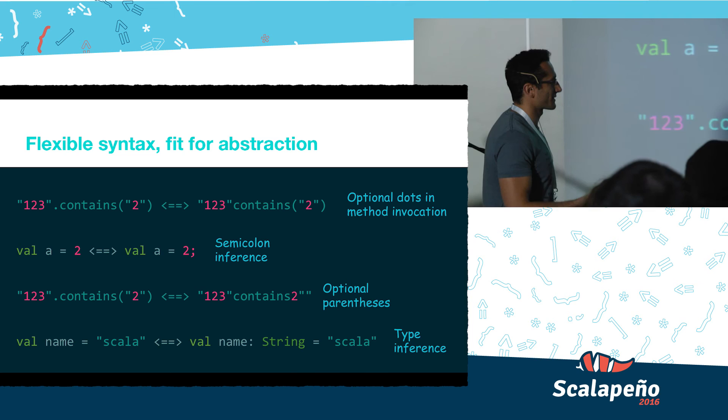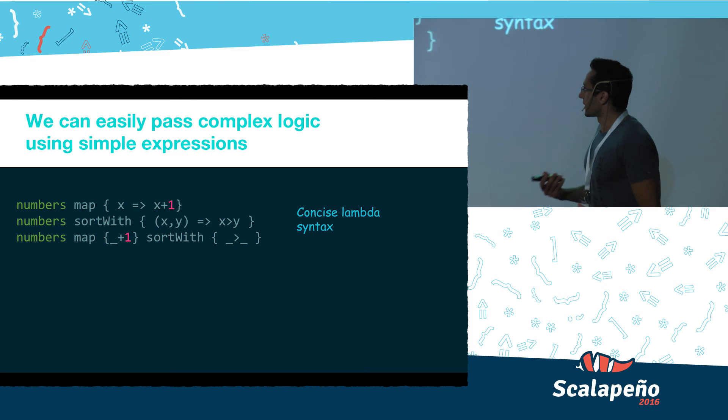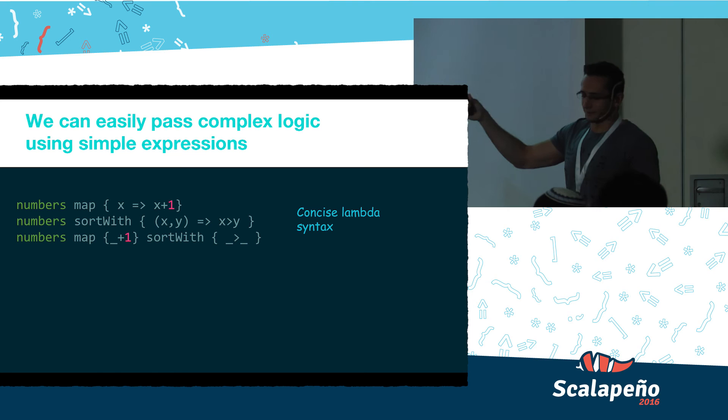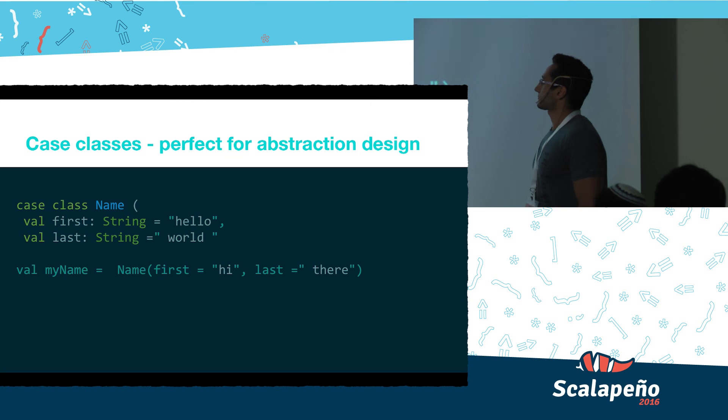Another feature Scala has is concise lambda expressions. Using lambda expressions we can pass expressive functions using minimal syntax. For example, in one line I can go over an entire array and increase each member by one, or sort an array using a comparator function.